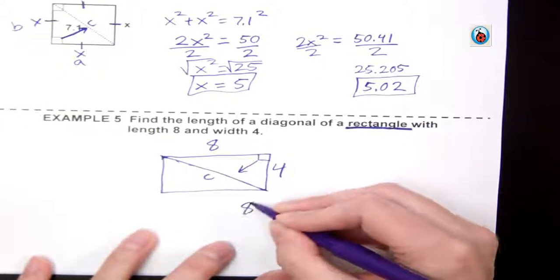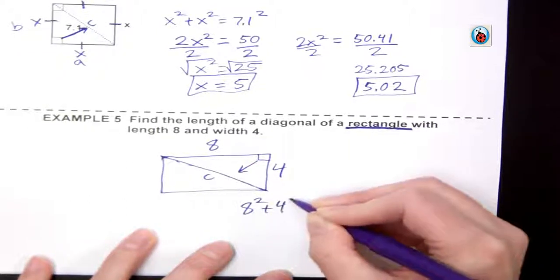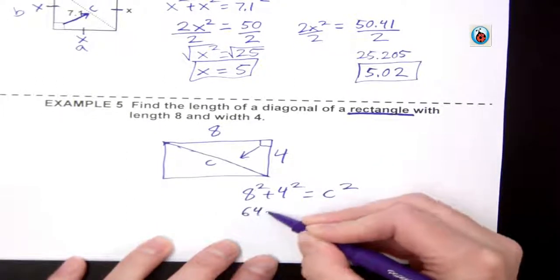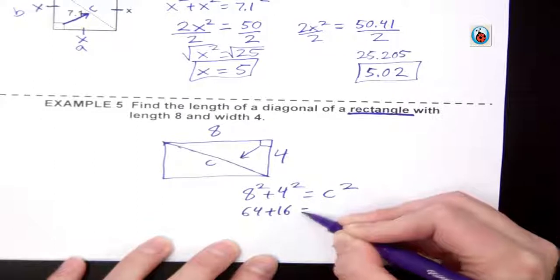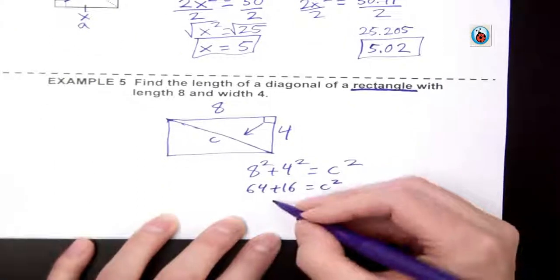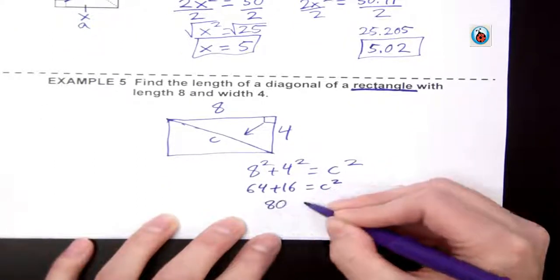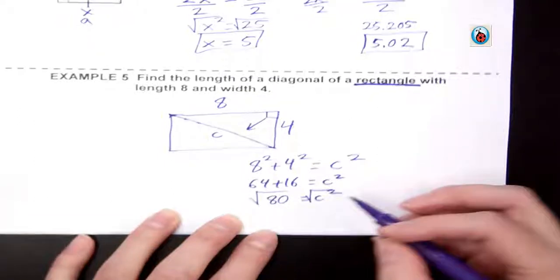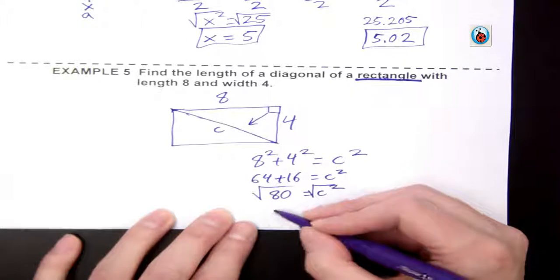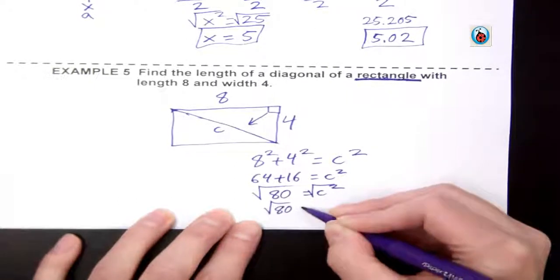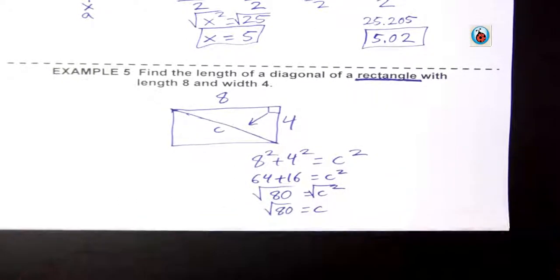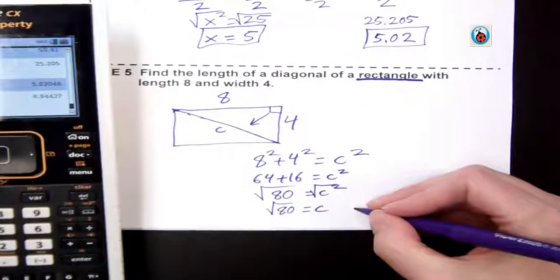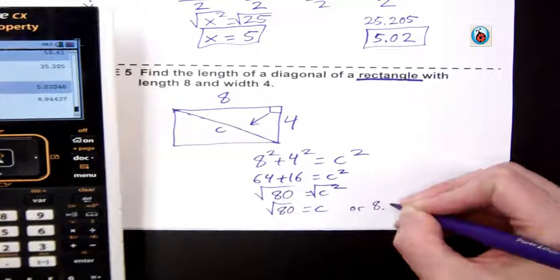We have 8 squared plus 4 squared equals c squared. That gives me 64 plus 16 equals c squared, which gives me 80 equals c squared. I take the square root of both to get the square root of 80 equals c, or I get the decimal answer by typing it in my calculator. It gives me 8.94.